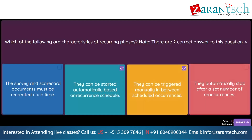Question. Which features are available to you within task details? Note, there are two correct answers. Option 1: Subtasks. Option 2: Delegation history. Option 3: Notification profile. Option 4: Predecessors.